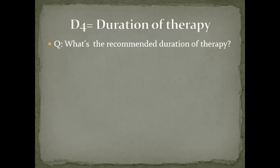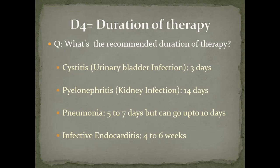The fourth D is the duration of therapy. You will decide this only if you know the underlying disease. If the patient is suffering from cystitis — a urinary bladder infection — the duration is three days; there is no point prescribing antibiotics longer than that. If the patient has pyelonephritis, a kidney infection, the duration is 14 days — never undertreat that. For pneumonias, the duration of therapy is five to seven days, but you can go up to ten days.